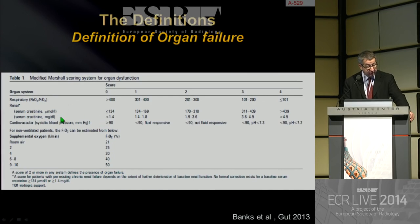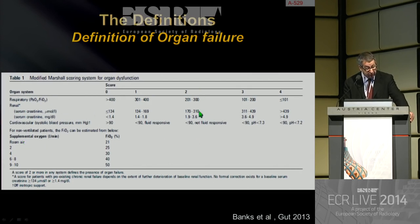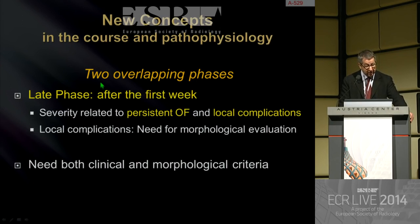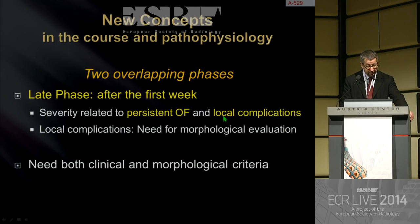Organ failure requires assessment of respiratory function, renal function with serum creatinine, and cardiovascular function with systolic blood pressure evaluation. A score of two or more in any of these three systems defines the presence of organ failure. You can have single or multiple organ failure, and what is important is whether it is transient or persistent. The late phase grossly begins after the first week, when severity is related to either persistent organ failure over 48 hours and the presence of local complications, which will clearly require morphological evaluation and contrast-enhanced CT.